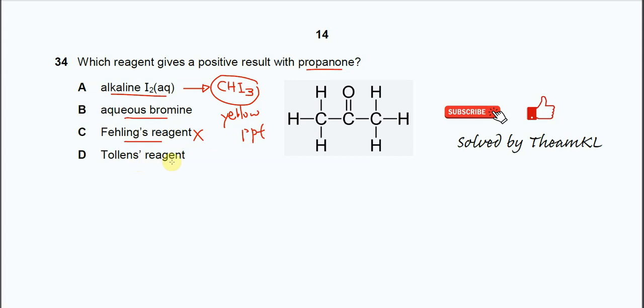Tollens' reagent is similar to Fehling's reagent - it's a mild oxidizing agent. It cannot oxidize propanol, so no positive results. Therefore, the answer is alkaline iodine solution.